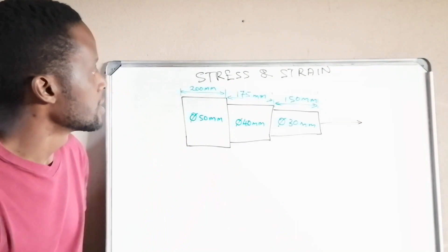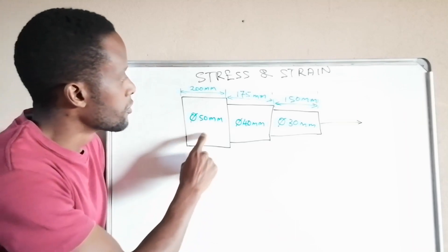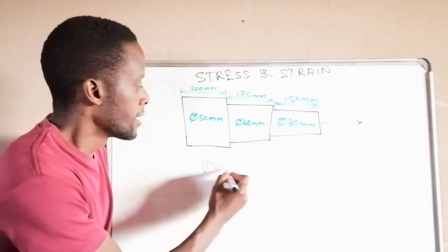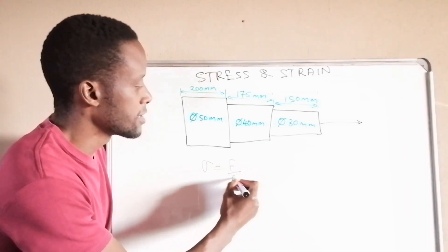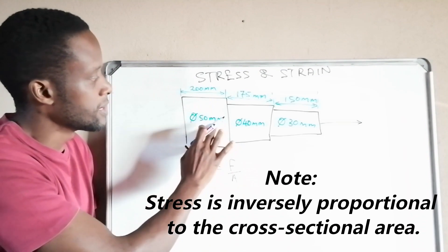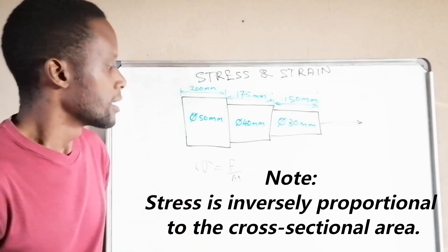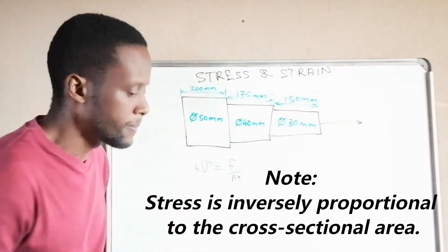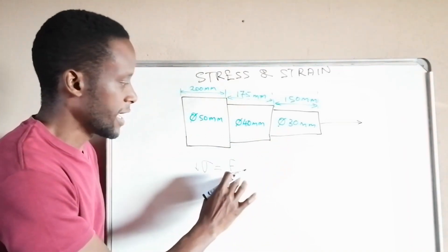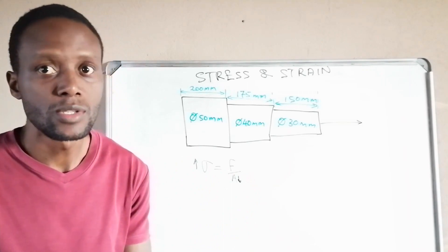Looking at the sketch, the bar has three parts with different dimensions, so each part will have its own stress based on its dimensions. Stress is directly proportional to the force but inversely proportional to the area. The part with a thicker diameter of 50mm will have less stress because the area is larger. Therefore, the maximum induced stress occurs in the smallest part — as area decreases, stress goes up.